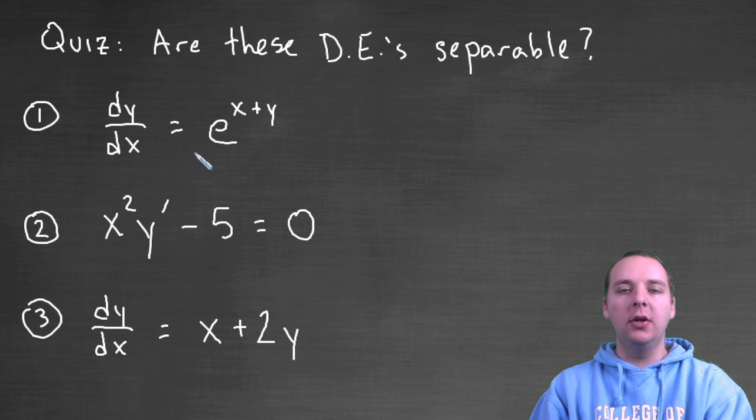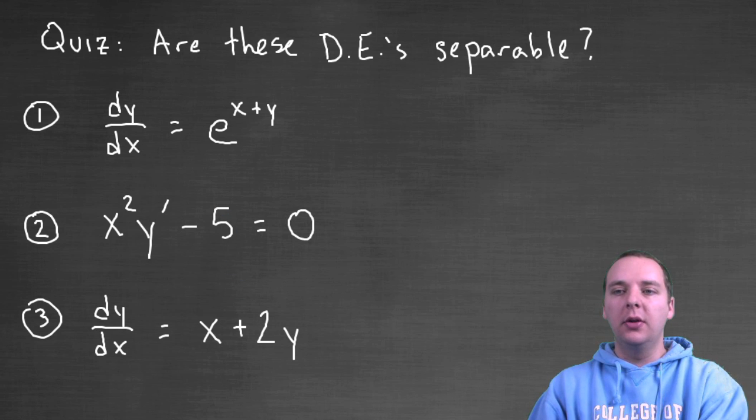If you want to pause the video, you can try to work these three out and see if you can write it as dy/dx equals a function of x times a function of y - that's the definition of separable. Now they're clearly not written that way, but the idea is can we write them that way? Let's start with number one.